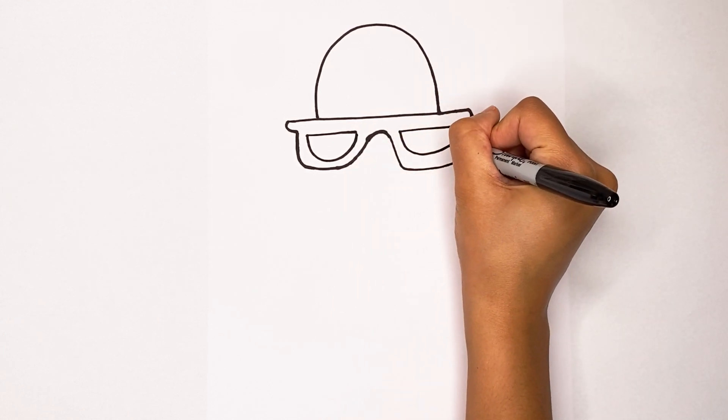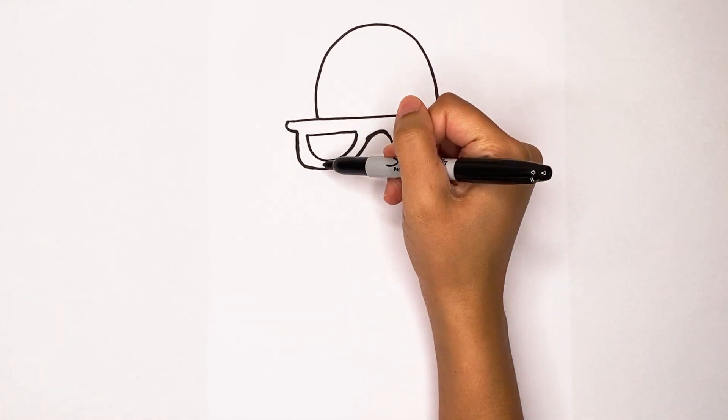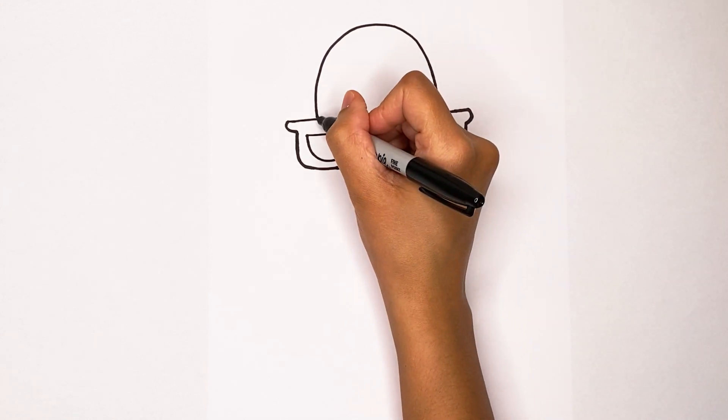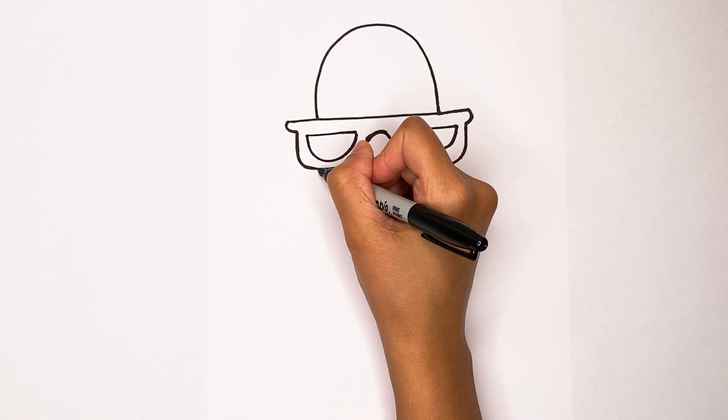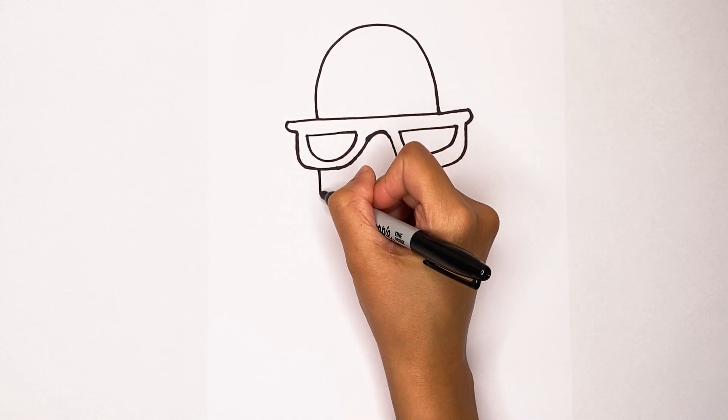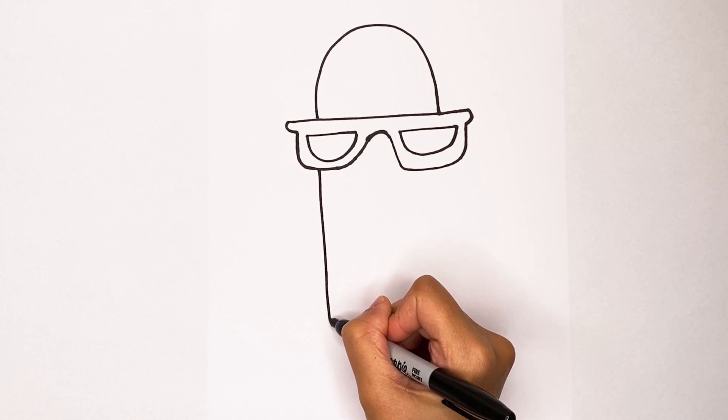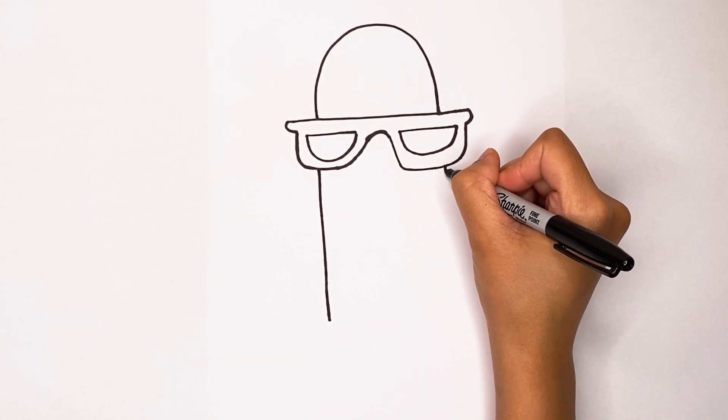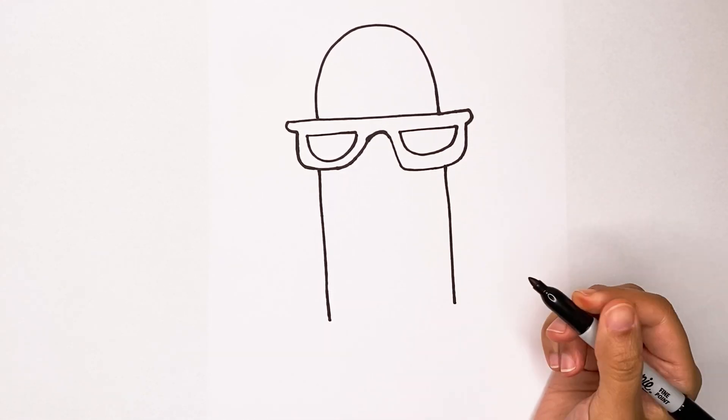You could just color this in black later when you start coloring. Now pretend this line goes down past the sunglasses, and then we're going to draw a line that goes down until you want your popsicle to end. I want mine right there. Same thing on the other side, down, down, down, and then stop.